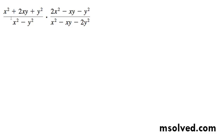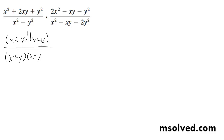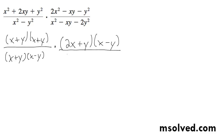Factor and simplify the following expression. The top we can simplify down to x plus y, x plus y. This bottom portion: x plus y, x minus y. And on top: 2x plus y, and then x minus y. And on the bottom here: x plus 2y, x minus y.